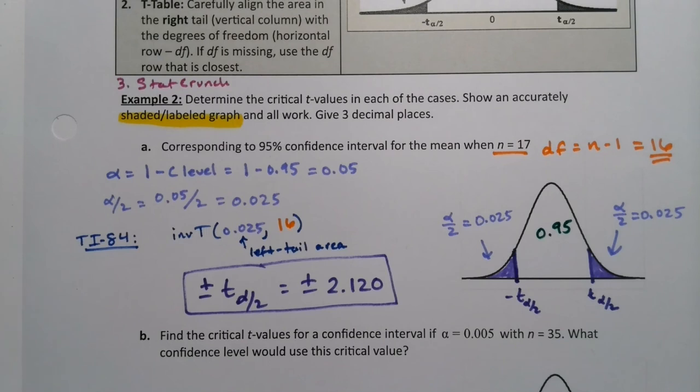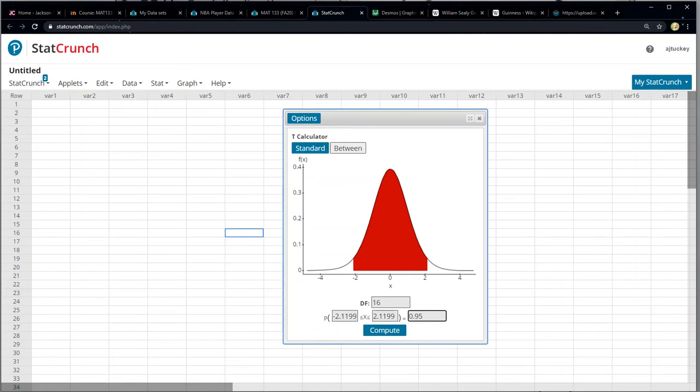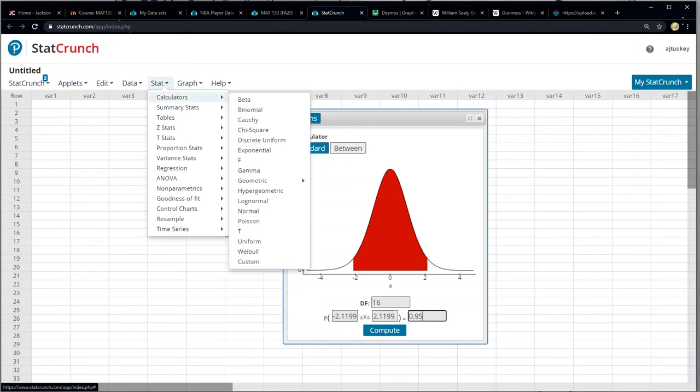StatCrunch, you actually have to choose. One more time, I'll show you. We chose Stat, Calculators, T, right? So that's what you would choose.